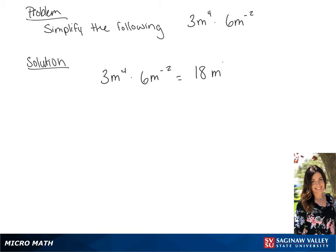Now we're going to add the exponents. So we have m to the power of 4 plus negative 2. Our final answer is going to be 18m squared.